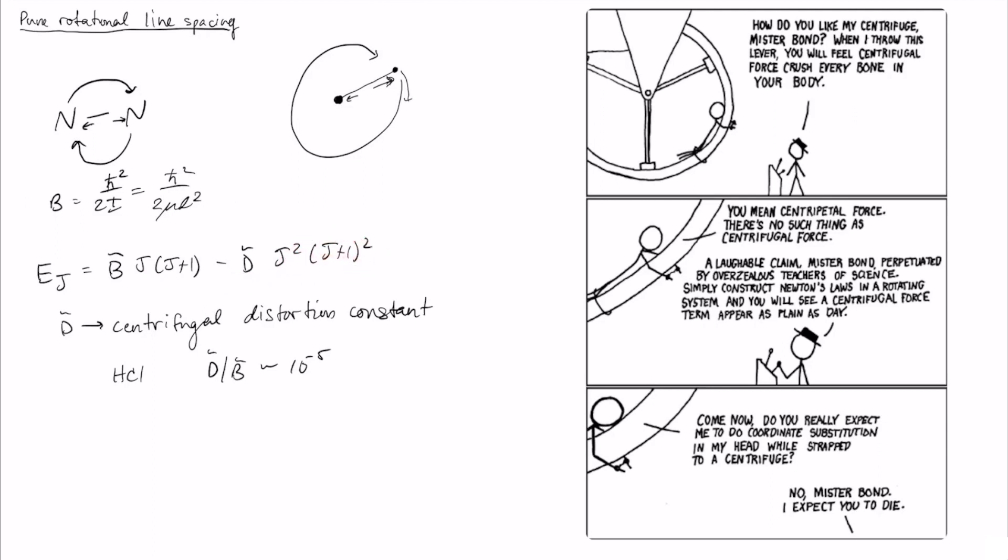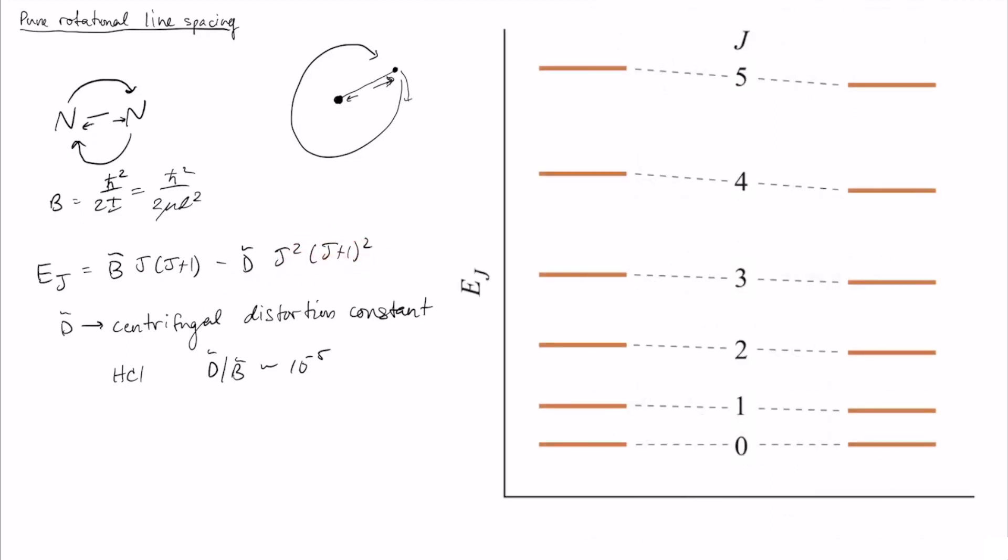This is showcasing actual data for HCl, the example we have here. What you're seeing on the left are the perfectly rigid rotator energy levels, and on the right here is what happens after you start to include the centrifugal distortion.